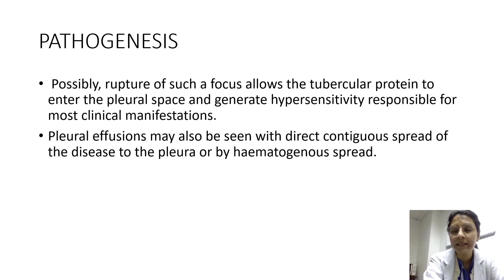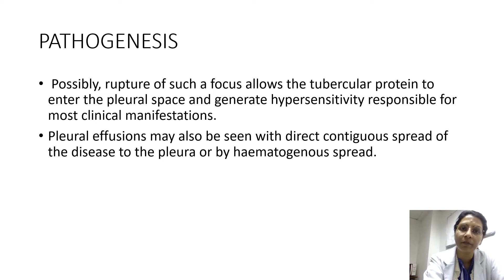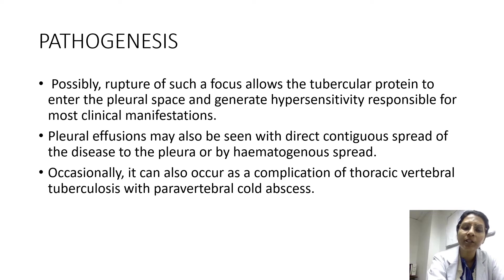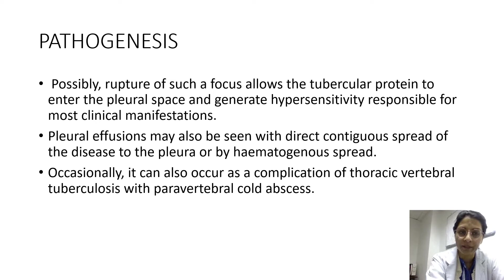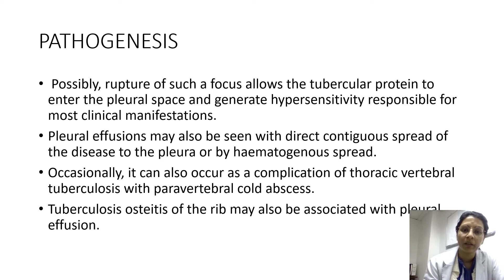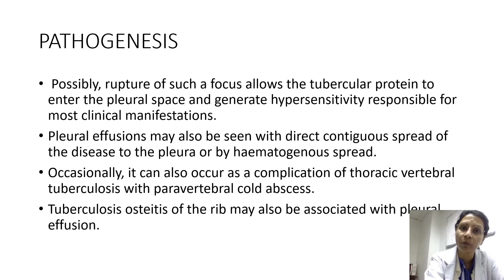Hematogenous spread is most commonly seen in immunosuppressed individuals like HIV-infected patients, severely diabetic patients, or those suffering from chronic renal failure. Occasionally, it can also occur as a complication of thoracic vertebral tuberculosis with paravertebral cold abscess. Tuberculosis osteitis of the rib may also be associated with pleural effusion.